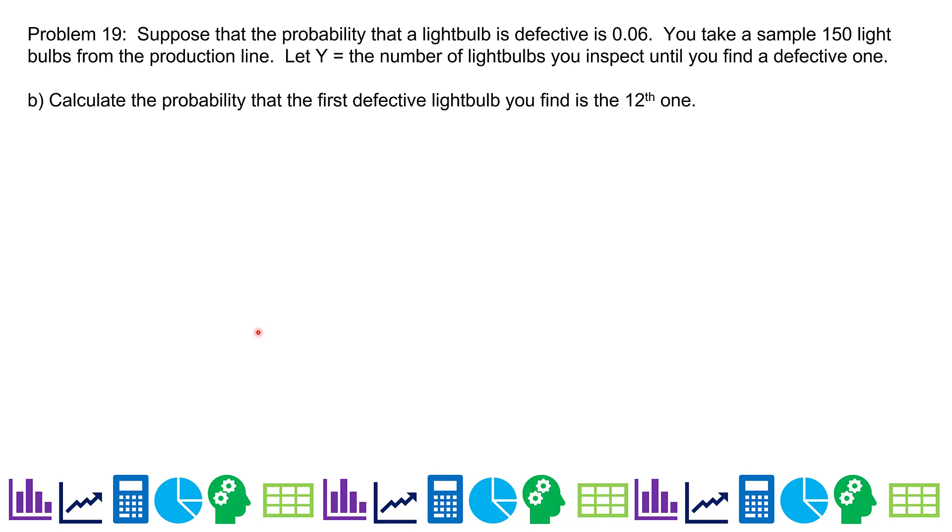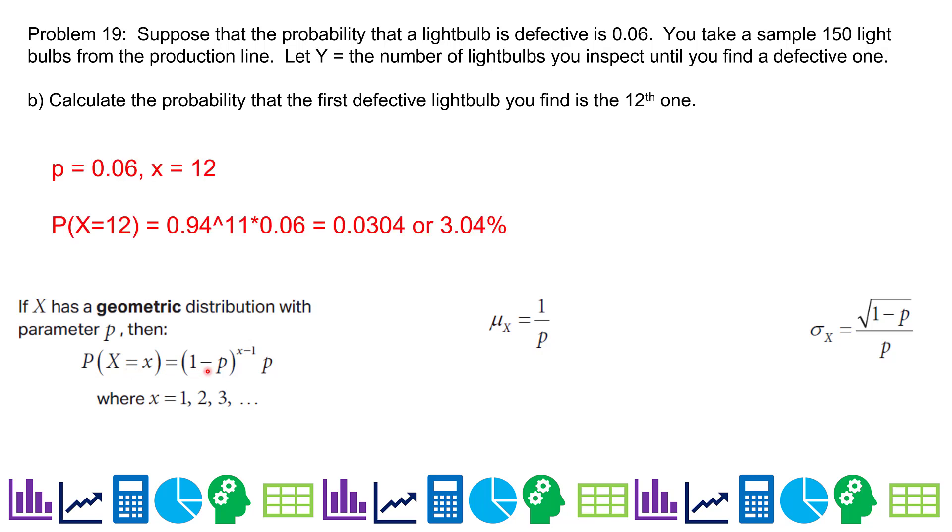Calculate the probability the first defective light bulb you find is the 12th one. There's your geometric distribution formula right here. So X is going to be 12. P is still 0.06. And basically 12 minus one is 11. That's where that 11 is coming from. And there's your 0.06 and you get 0.0304 or 3.04% probability.